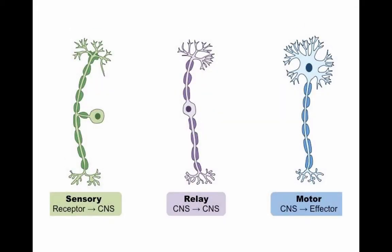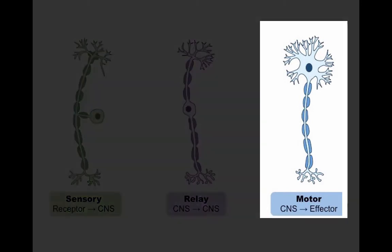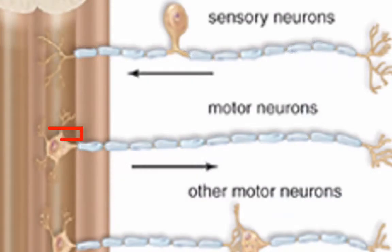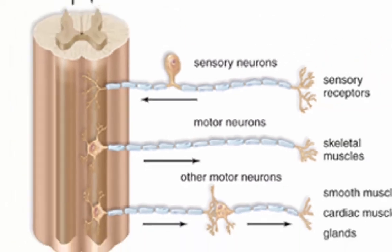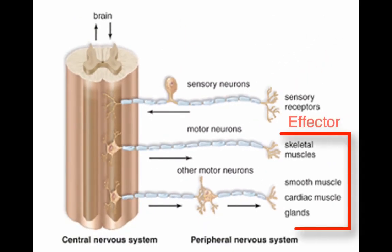Once the electrical impulse has been processed and interpreted, an autonomic or somatic response may result, and that electrical impulse is sent to the target tissue, organ, or gland via a motor neuron. Motor neurons usually have short dendrites, which means the cell bodies are still in the spinal cord. Their axons, though, may be very long. Motor neurons can have an effect on muscles to move or glands to excrete hormones, so we call the target tissue, organ, or gland the effector.